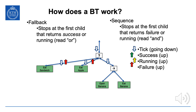However, if eat apple also returns failure, the fallback takes its next child — the sequence operator — which takes its first child, open banana. When open banana succeeds, the sequence ticks the next child, eat banana. If eat banana returns running, running propagates up the tree. Running always propagates upward; success and failure are handled differently for the different interior nodes.